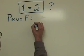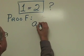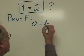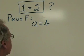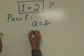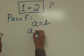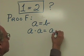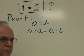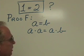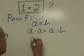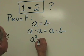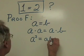In our first step, we're going to let a equal b. So a and b are equal to each other. We're going to multiply the left side by a and the right side by a. As a result of this multiplication, we have a squared on the left side and ab on the right side.